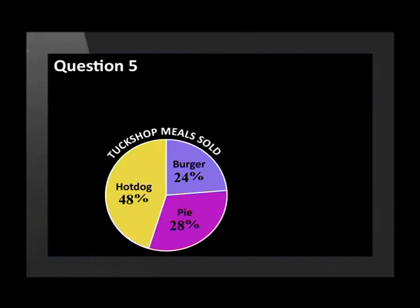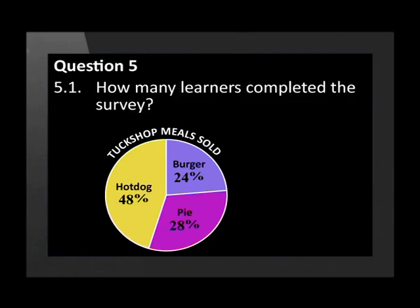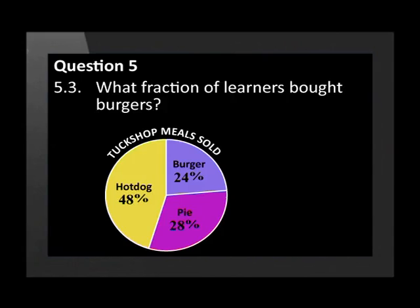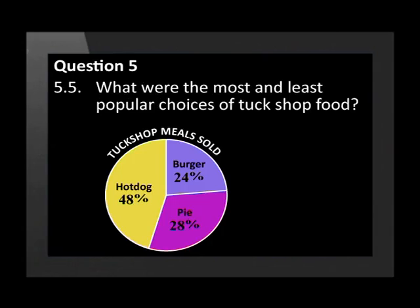Good work. I hope you're feeling more confident in your work. In the next question, we analyze data presented in a pie chart. Your school principal is very interested in what types of food the learners are buying at the school tuck shop. He believes that a healthier approach to school lunches is needed. This shows the type of lunches bought by a random sample of 50 learners. How many learners completed the survey? How many of the learners bought pies? What fraction of learners bought burgers? What fraction of learners bought hot dogs? What were the most and least popular choices of tuck shop food?